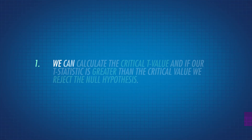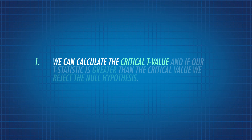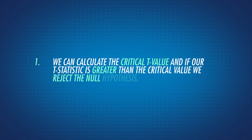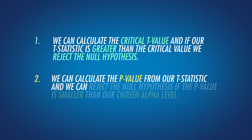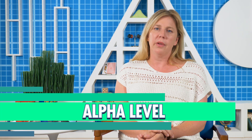There are two ways to do this. We can calculate the critical t-value, and if our t-statistic is greater than the critical value, we reject the null hypothesis. Or we can calculate the p-value from our t-statistic, and we can reject the null hypothesis if the p-value is smaller than our chosen alpha level. To do either of these things, we'll need to choose our alpha level. Our alpha is arbitrary, but usually people use .05, since that means that in the long run, only 5% of tests done on groups with no real difference will incorrectly reject the null. So we'll use an alpha of .05 here.